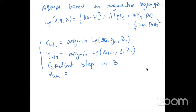Just to complete the ADMM update: z^{k+1} = z^k + rho*(y^{k+1} - Dx^{k+1}).